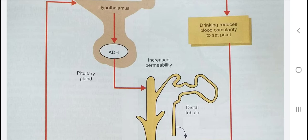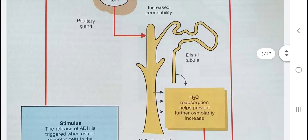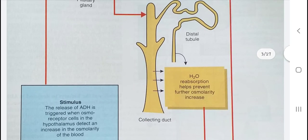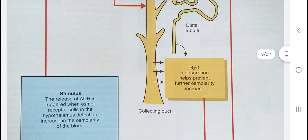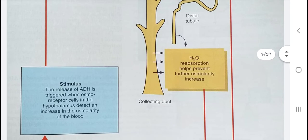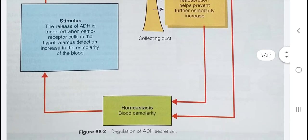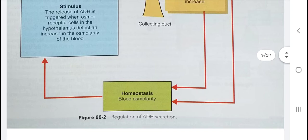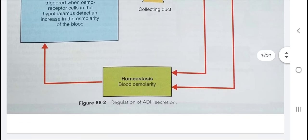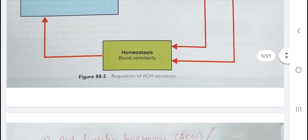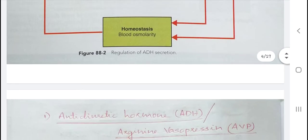Increased osmolarity also triggers release of ADH from the pituitary gland, which acts on different parts of the kidney tubule, increasing water reabsorption. This prevents further increases in osmolarity of blood and body fluids, setting osmolarity back to normal and maintaining homeostasis.